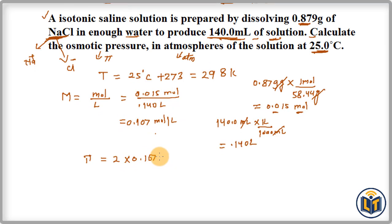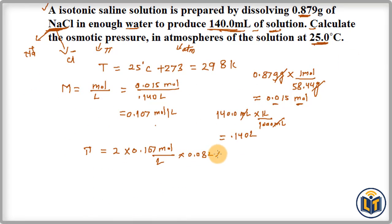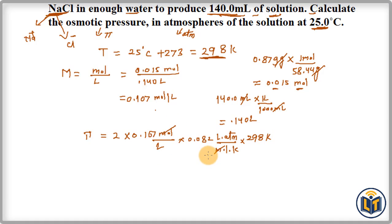R = 0.0821 L·ATM / mol·K, and T = 298 K. Now we cancel units: moles cancel with moles, Kelvin cancels with Kelvin, and liters cancel with liters. We are left with only ATM as the unit, which is exactly what we need for osmotic pressure.